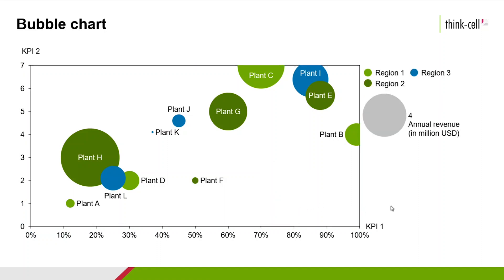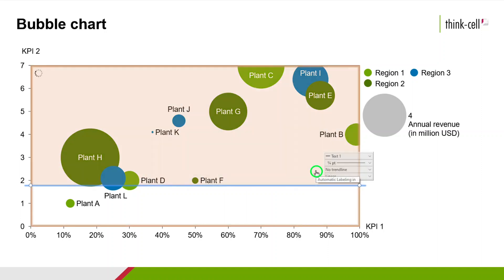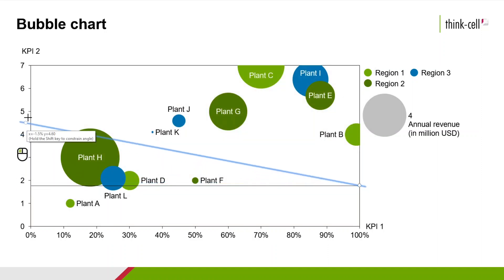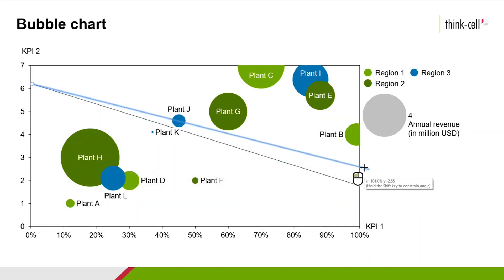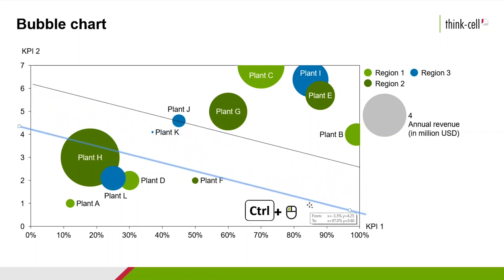Let's say you would like to add partitions into your bubble chart to mark different ranges of values. Right-click on the chart and pick Add Trendline Partition from the context menu. Use the handles at each end to change the angle of the line. Then, make a copy of the line by dragging it while holding down Control. This way, you can easily create parallel lines.